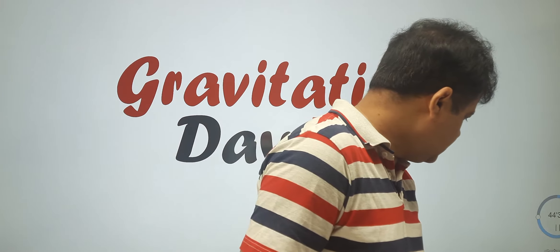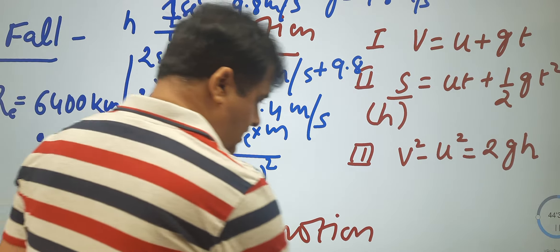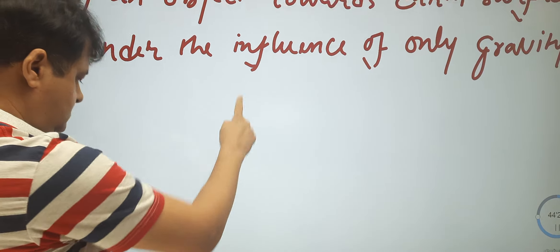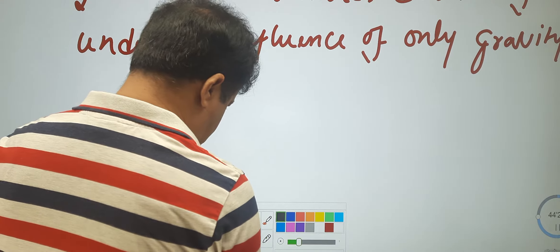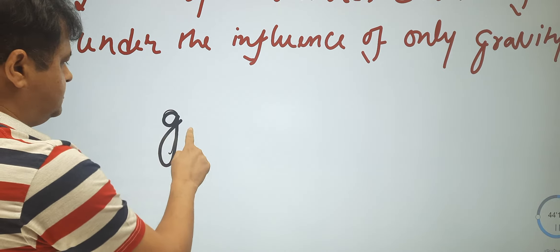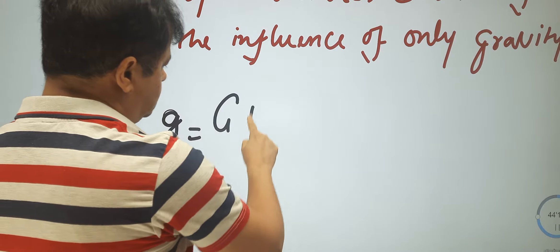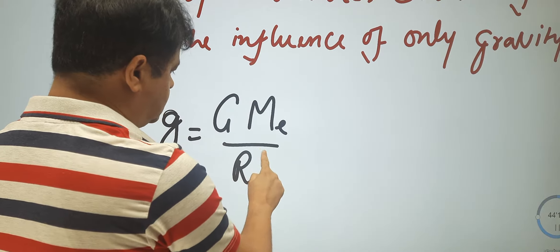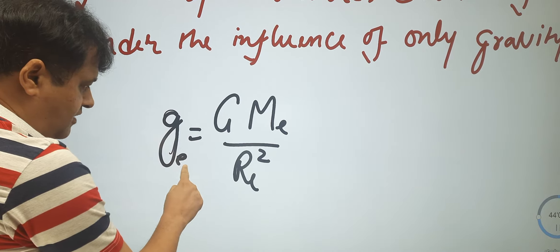In the last class we discussed acceleration due to gravity. The force with which the earth attracts objects towards its core is called gravity. Acceleration due to gravity, or small g, can be expressed by the formula: g = GM/R², where G is the universal gravitational constant, M is the mass of earth, and R is the radius of earth. This is acceleration due to gravity on the earth's surface.